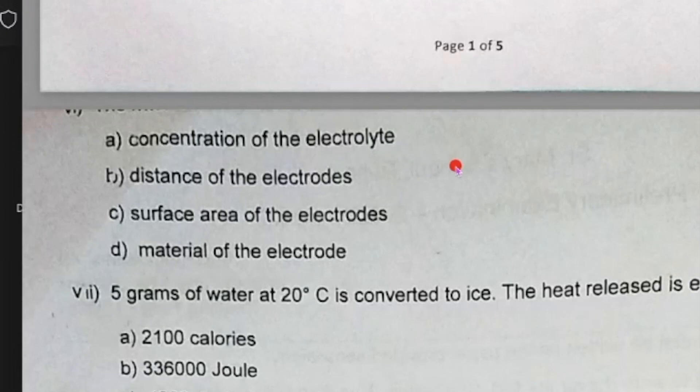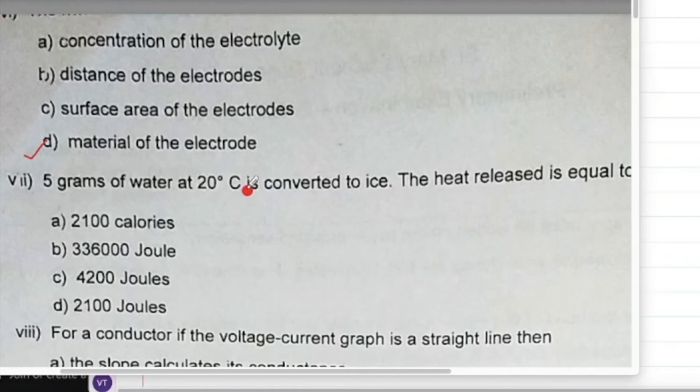So internal resistance depends upon the concentration, distance, and surface area. It does not depend upon the material, right? Do you remember that? Just go through those, it's important. Does not depend upon the material of the electrode. 5 grams of water at 20 degrees is converted into ice. The heat released is equal to...